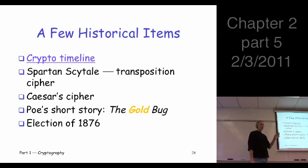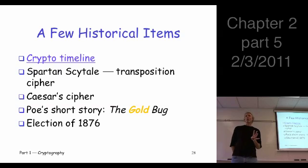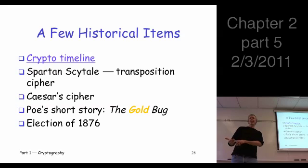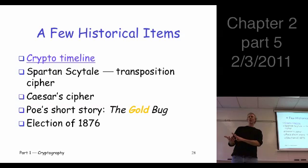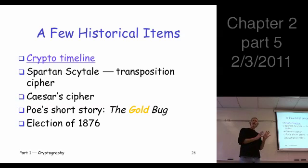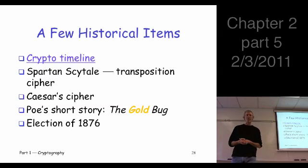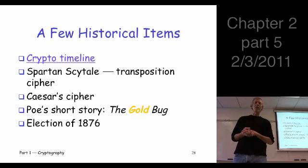Then we looked at four classic ciphers. What were those four ciphers? Simple substitution, double transposition, one-time pad, and codebook. You should know those four ciphers. We'll see all of those concepts come up again later.